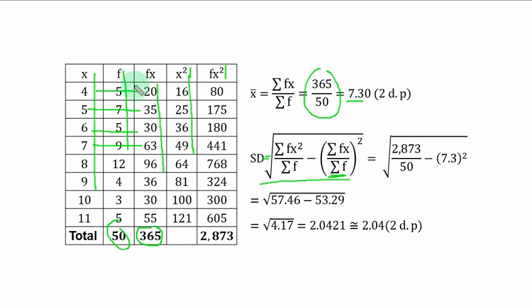To get fx squared, you use the frequency column to multiply x squared column. So 5 times 16 is 80. 7 times 25, you have 175. 5 times 36, you have 180.